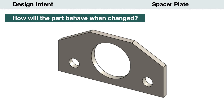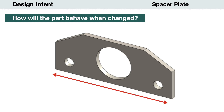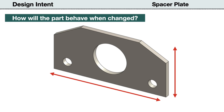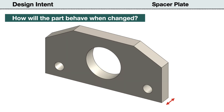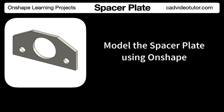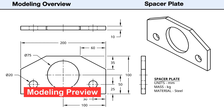If the design intent is applied correctly, we can revise the length, or change the height of the part, or change its thickness, and the model will update without errors. Before we model the part in Onshape, let's preview the steps in the modeling process.